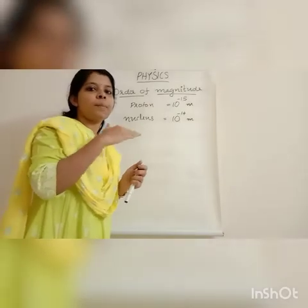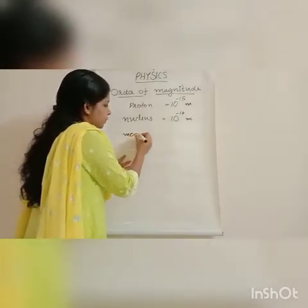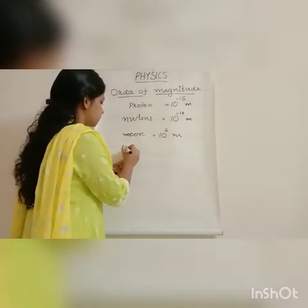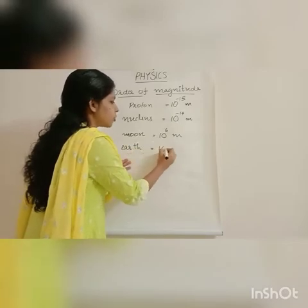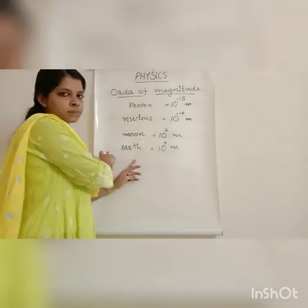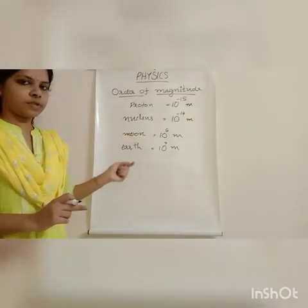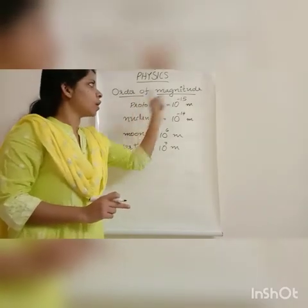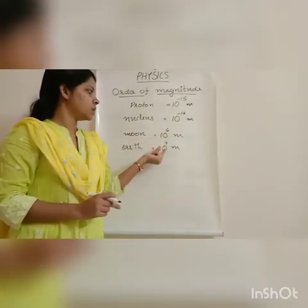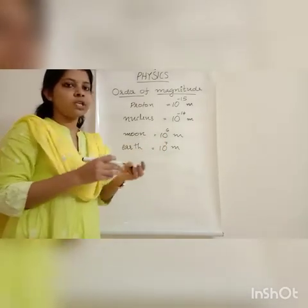Similarly, we can compare very large values. The radius of the moon is of the order of 10 raised to 6 meter, and the radius of the earth is of the order of 10 raised to 7 meter. Since 10 raised to 7 is greater than 10 raised to 6, the radius of earth is greater than the radius of moon. This is the use and application of order of magnitude.